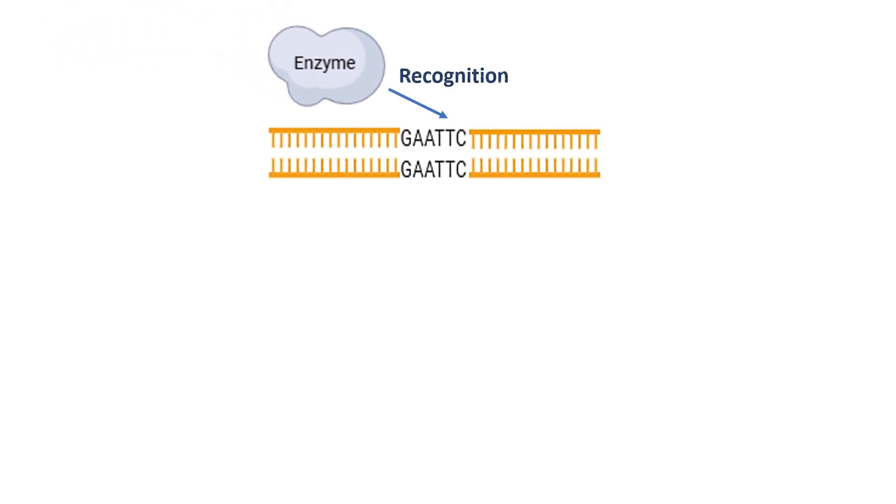Each restriction enzyme recognizes a short and specific sequence of nucleotide bases. These regions are called recognition sites or restriction sites, and are randomly distributed throughout the DNA.